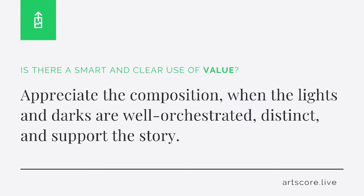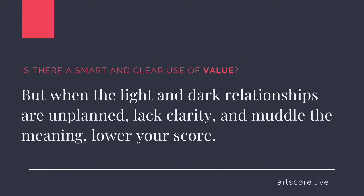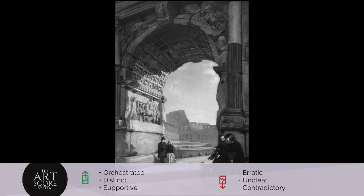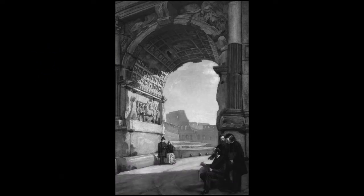Value. Is there a smart and clear use of value? Appreciate the composition when the lights and darks are well orchestrated, distinct, and support the story. But when the light and dark relationships are unplanned, lack clarity, and muddle the meaning, lower your score. I scored the composition a 9. For me, I clearly see how the values are intelligently orchestrated to support the story and protect the integrity of all the components within the composition. What's your score?